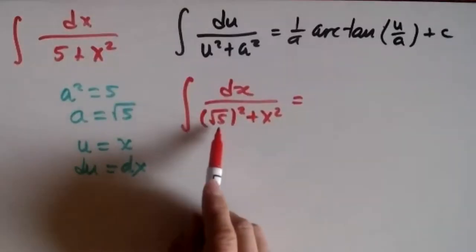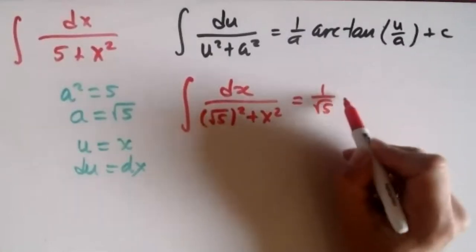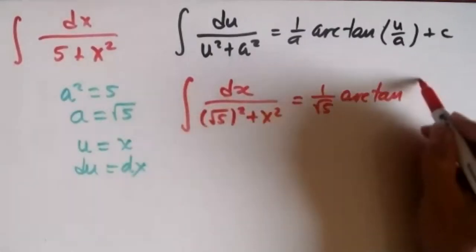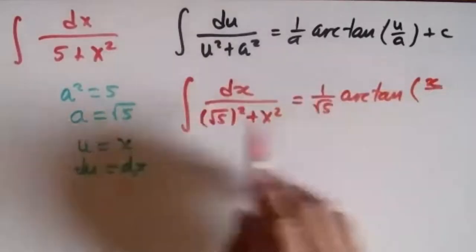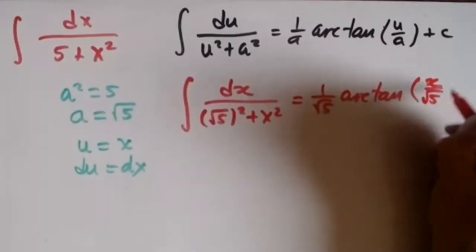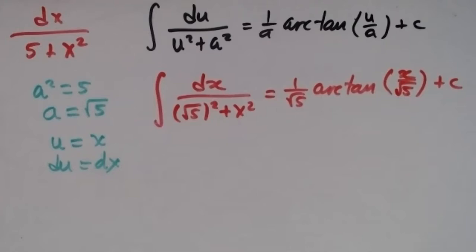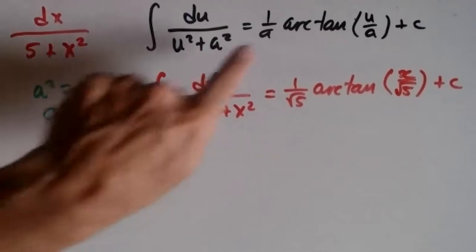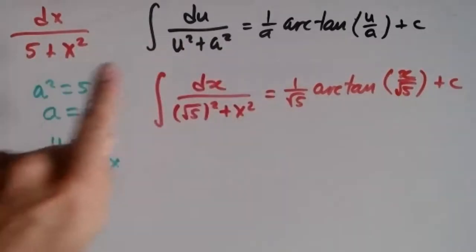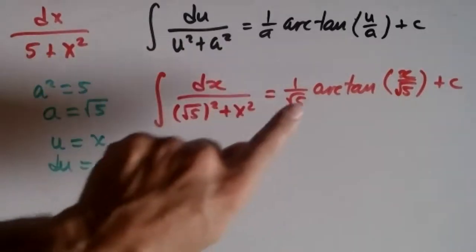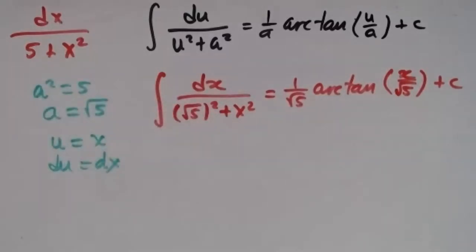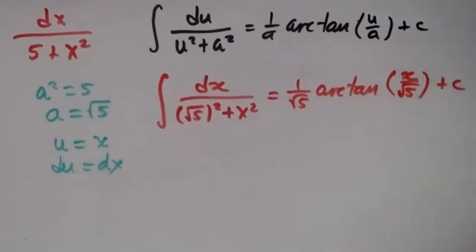Applying the formula, the answer is (1/√5) arctan(x/√5) plus C. As long as I match my expressions, identify who's who, and use the formula, I find the solution. Pretty much all problems will follow this approach.